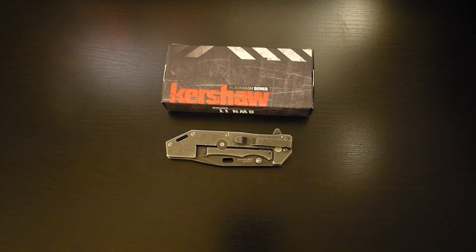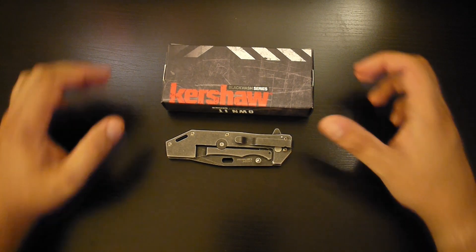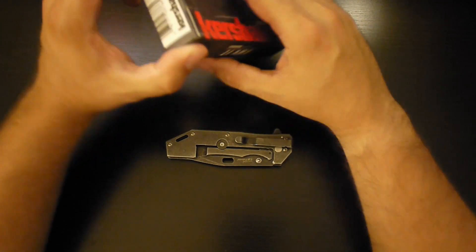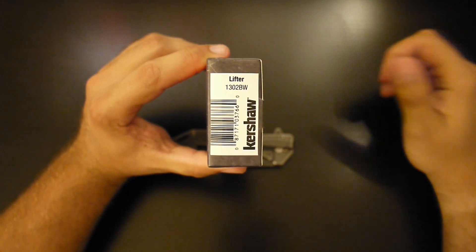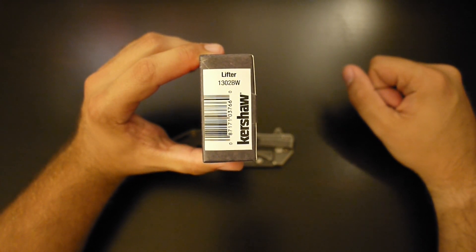Today we will be reviewing the Kershaw Lifter. This is part of their Blackwash series. It's model number 1302BW.